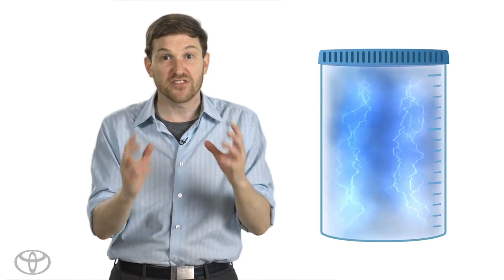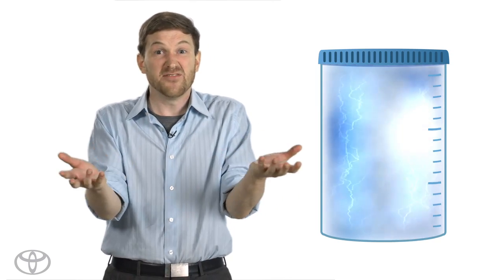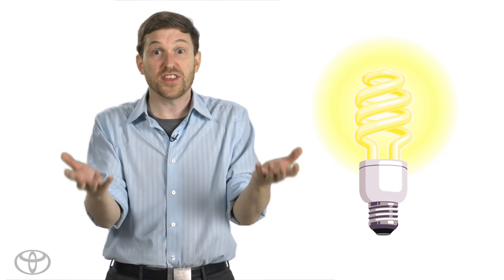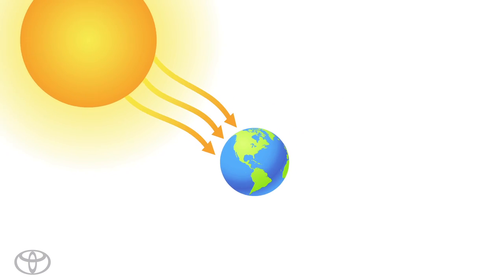On Earth we see plasma in flashes of lightning and you probably already use plasma. It's in fluorescent bulbs and did you know that the Earth itself is actually lit by plasma? That's right, the Sun is a ginormous ball of plasma.